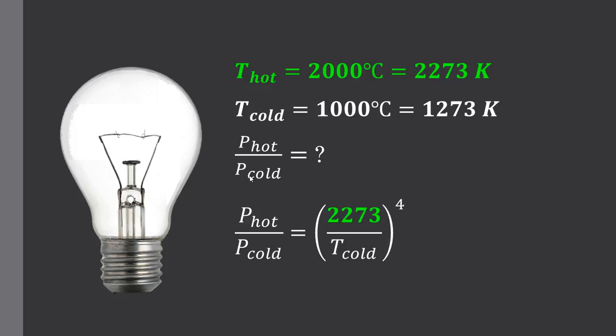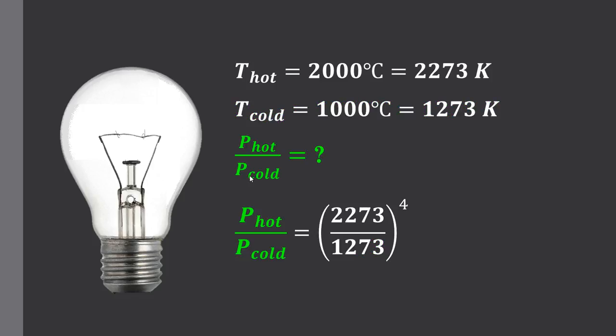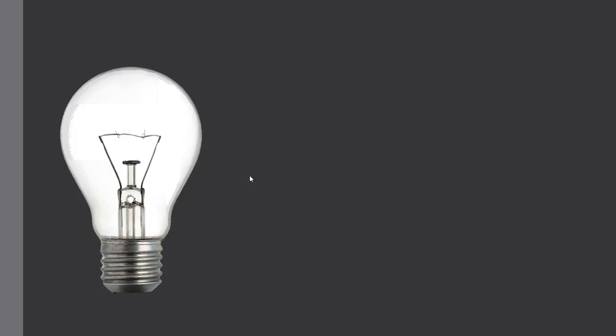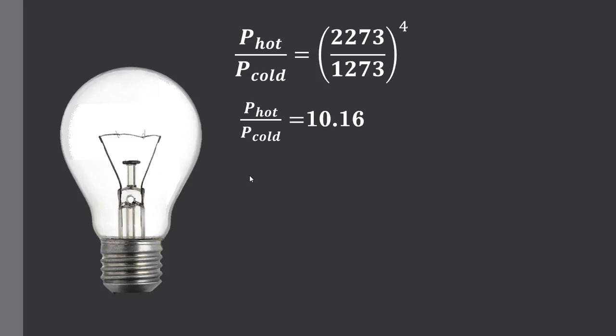There's our equation. Let's substitute in our values. The hot temperature 2,273. The cold temperature 1,273. And we want to find this ratio or fraction P_hot over P_cold. Let's simplify the right hand side. And we get a value of 10.16. This tells me that hot power divided by cold power has a value of 10.16. Or alternatively we can say that the hot power of this light globe is 10.16 times brighter than that of the cold power.